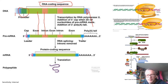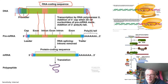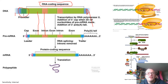In prokaryotes, there are two promoters we talked about: the minus 35 TTGACA box and the minus 10 Pribnow box. And in eukaryotes we talked about two different promoters.